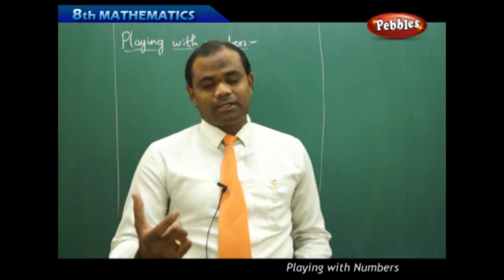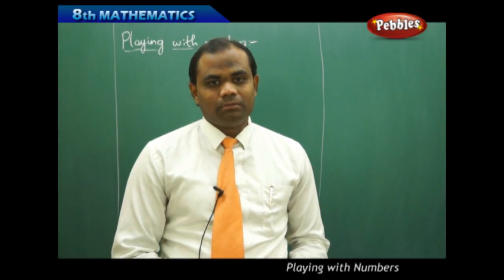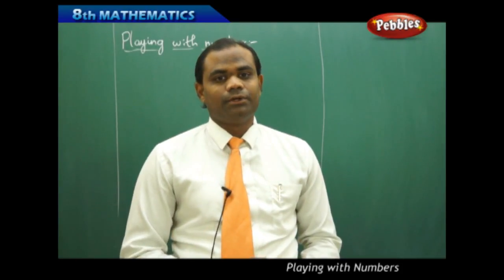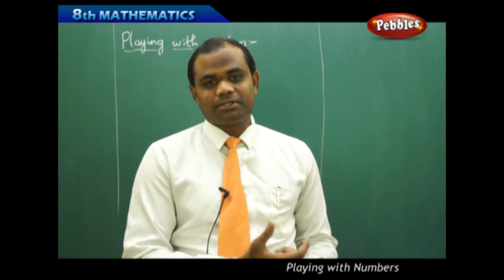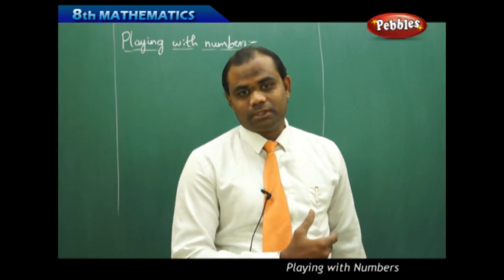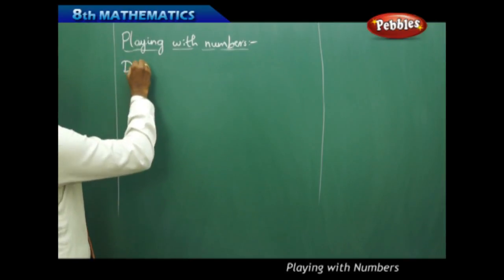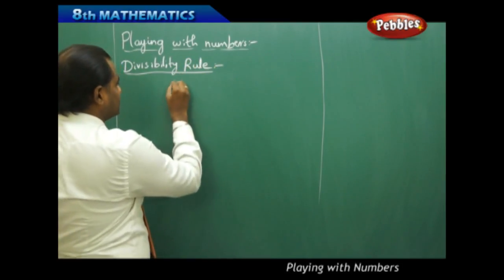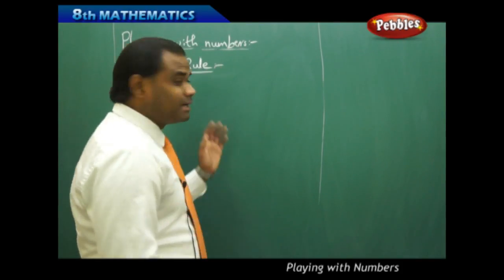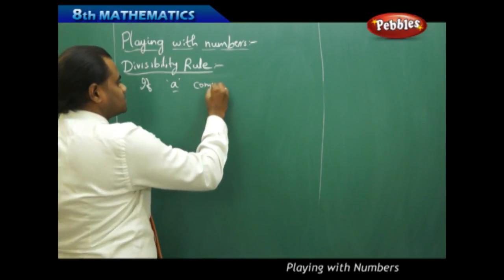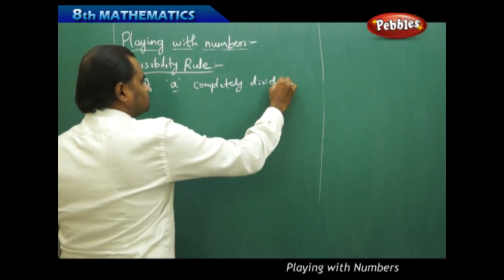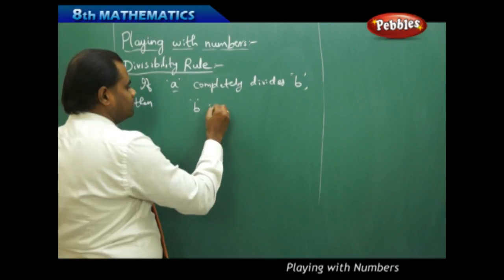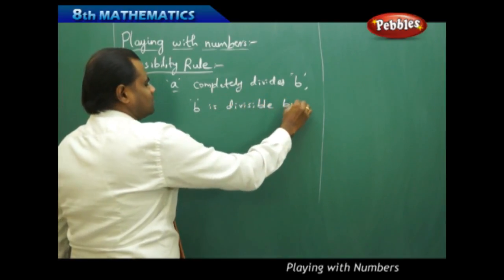The basic concept through which we start playing with numbers is the divisibility rule. When we identify that a number is divisible by another number through some process, we need to first understand the basic divisibility rule, because the whole of the content we are going to discuss in the coming sessions depends on it. The divisibility rule says: if a number 'a' completely divides a number 'b', then 'b' is divisible by 'a'.